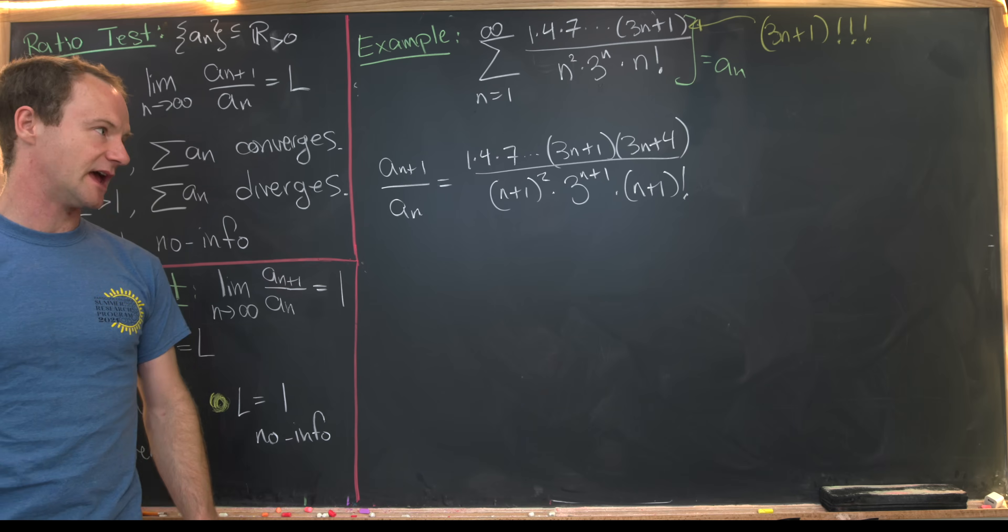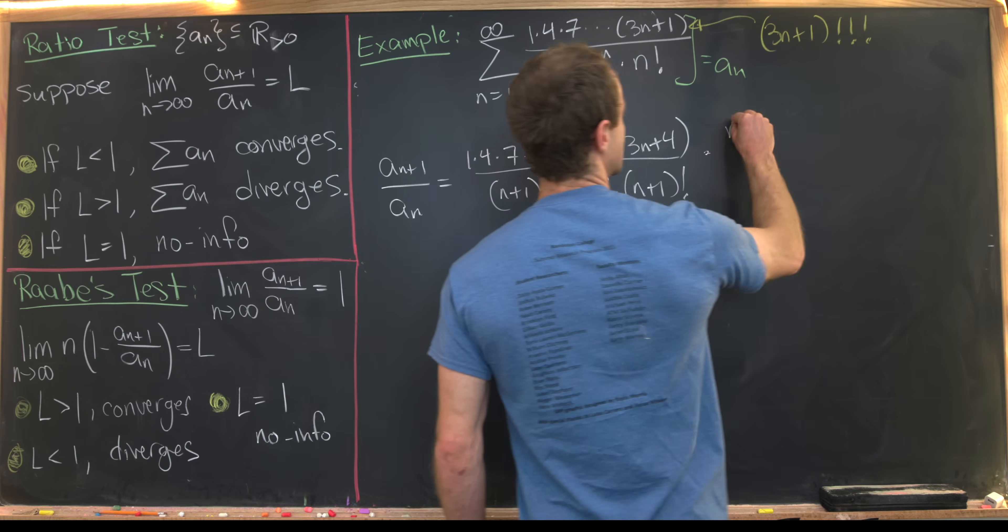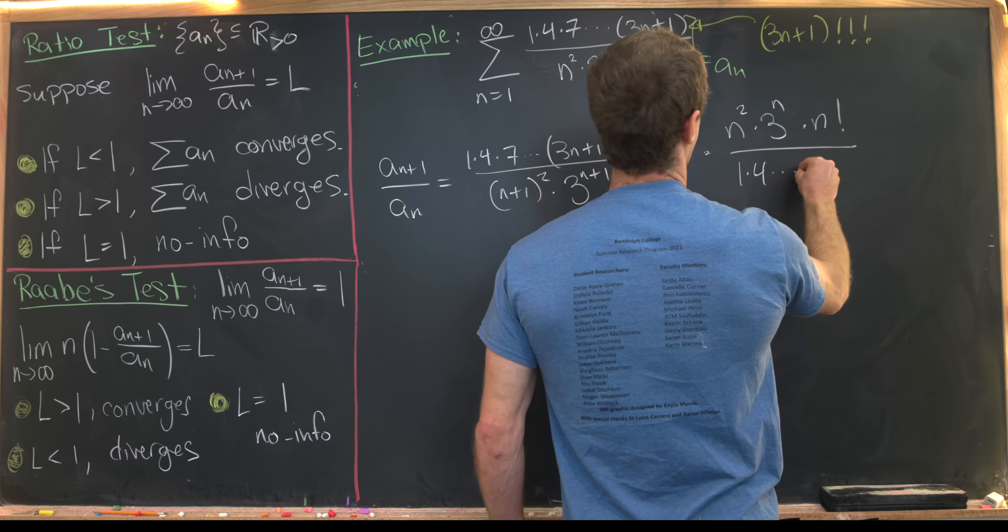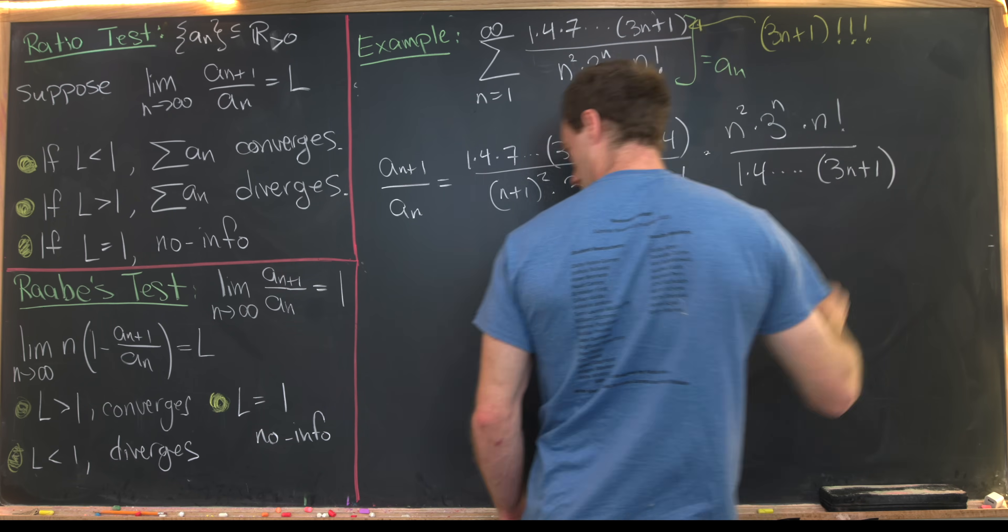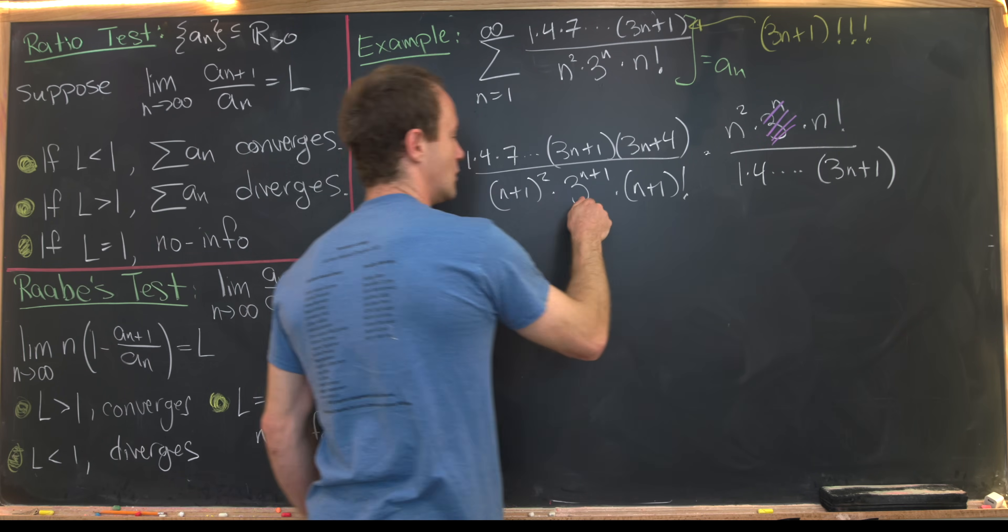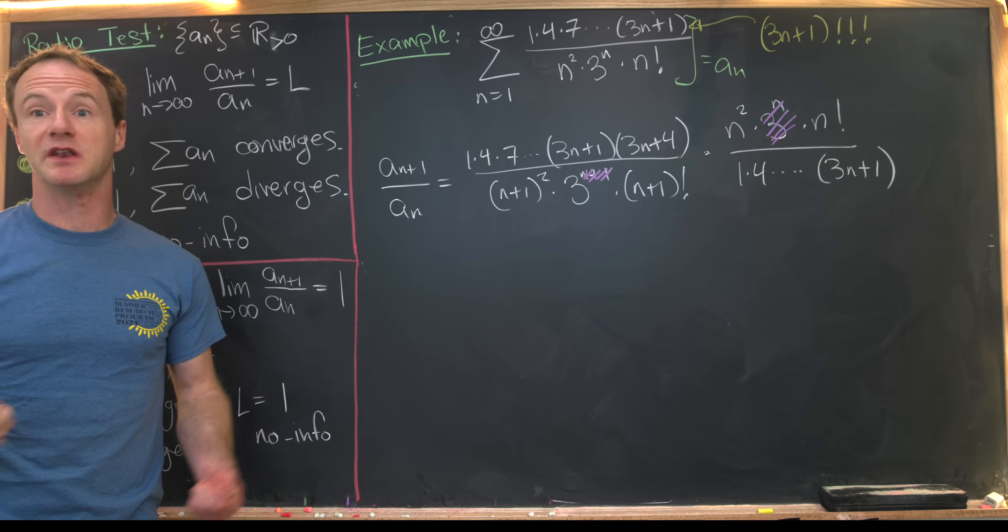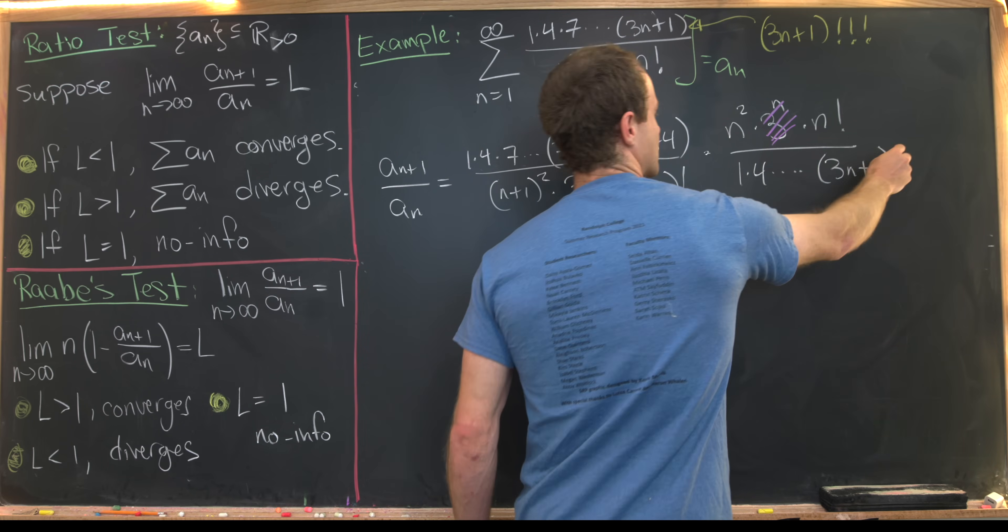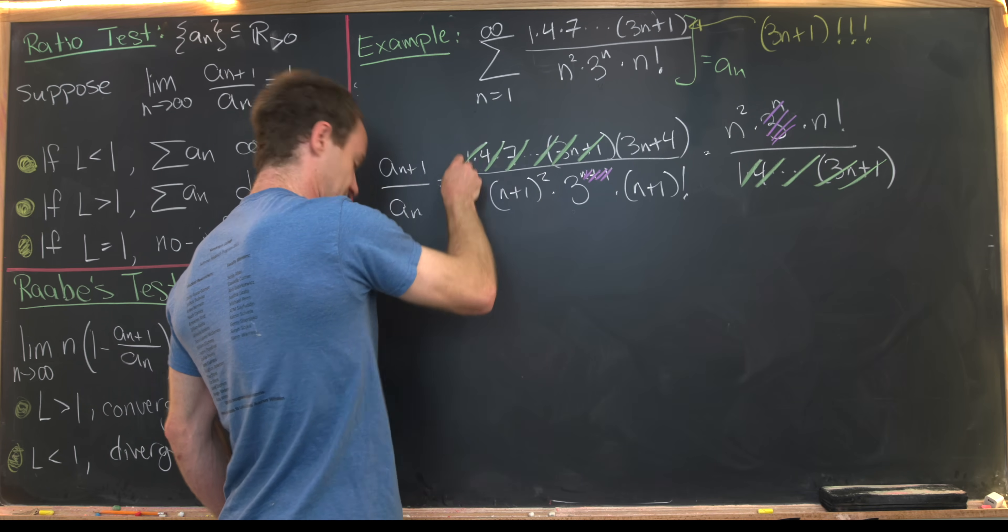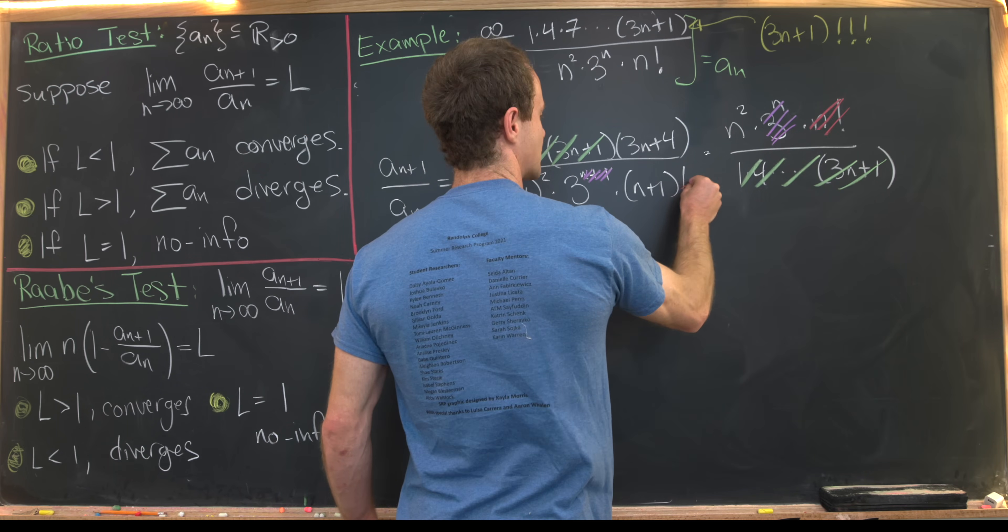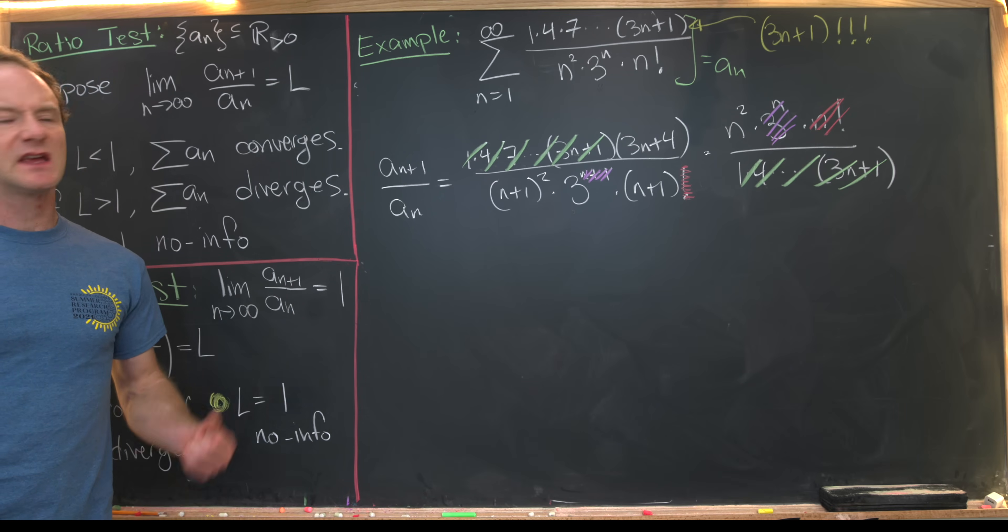And now instead of dividing by a_n, I'm going to multiply by the reciprocal of a_n. That'll make it simpler. So I've got n²·3^n·n! over (1·4···(3n+1)). And now we can start canceling out like terms. So notice that this 3^n will cancel this 3^{n+1} down to just the number 3. Next, this 1·4·7 up to 3n+1 will cancel this 1·4·7 up to 3n+1, leaving us with that 3n+4 term. Finally, this n! will cancel with this (n+1)·n!, just leaving us with n+1. Keep in mind that that (n+1)! is just (n+1) times n!.